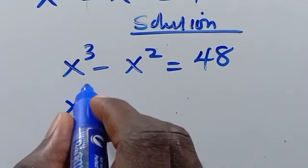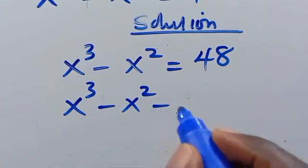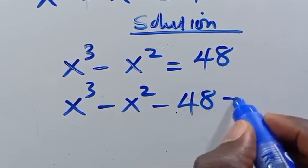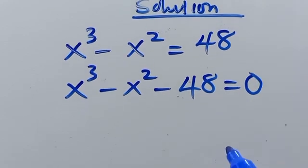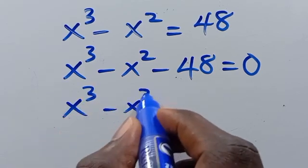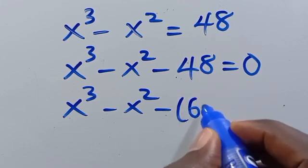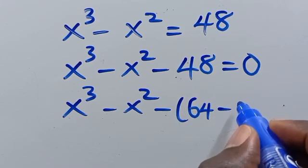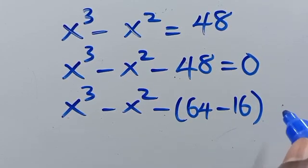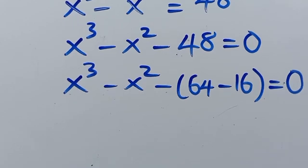Let's find the solution. From here we have x to the power of 3 minus x squared minus 48 equals 0. We can write 48 as 64 minus 16.